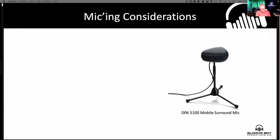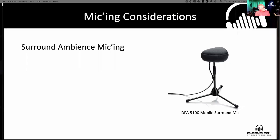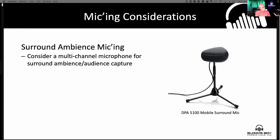I've been using Neumann TLM-103s as a large diaphragm in audience and ambience capture for quite a few years, combined with some Neumann short barrel shotguns. I also put up this microphone — a DPA 5100 mobile surround mic. The idea is that you want to consider a multi-channel microphone for your surround, ambience, and audience capture so that you can future-proof your recordings. Even though we did all these single mic captures on all the Tom Petty stuff, I always did a surround capture as well.